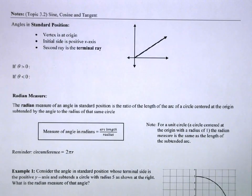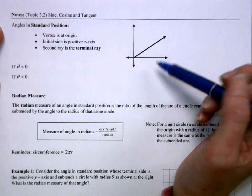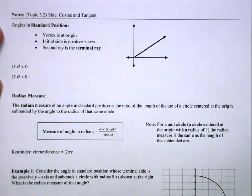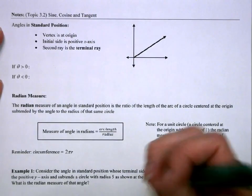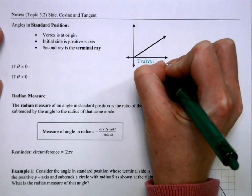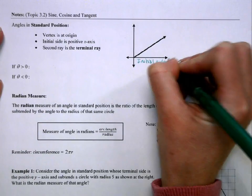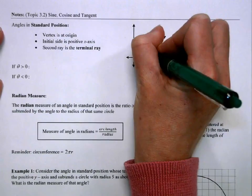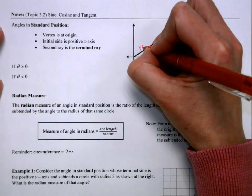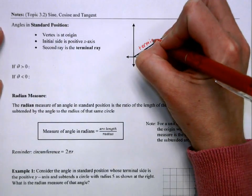First, we're going to talk about angles in standard position. If we have an angle in standard position, the vertex of the angle is at the origin. The initial side is the positive x-axis, so in this diagram, this is our initial side. And then we're going to measure up to this other ray, which is called the terminal side or the terminal ray.